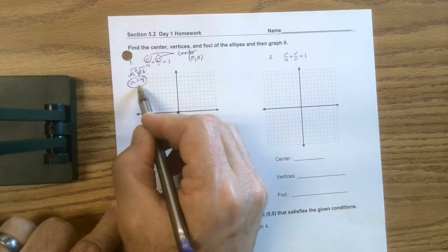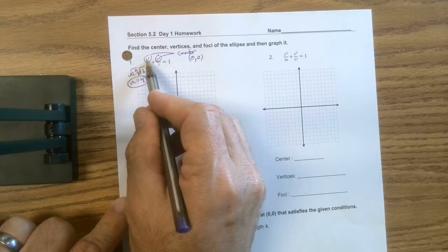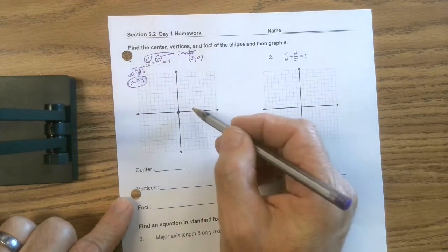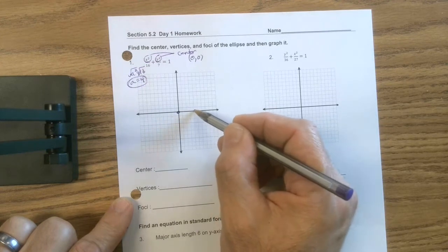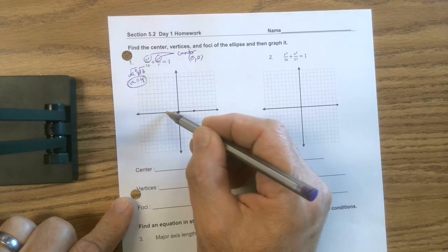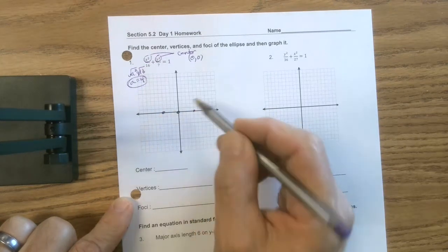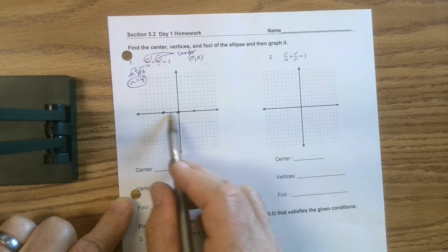This is the distance we're going to travel along the x-axis in both directions. So I go 1, 2, 3, 4. 1, 2, 3, 4. Because that's my a. That's going to be my major axis.